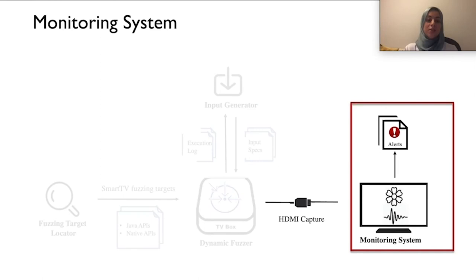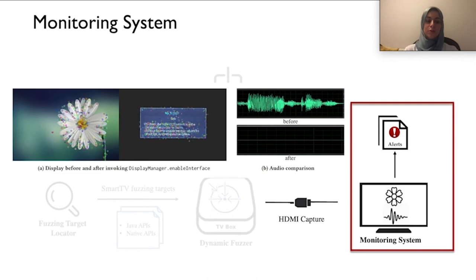To detect potential anomalies triggered by a test case, the fuzzer leverages two channels. First, it inspects the execution log to spot indications of cyber anomalies. Second, it relies on the external monitor to capture physical changes. Specifically, we launch a media player to play visual and audio content before and after each test execution, redirect the signals via an HDMI capture device for comparison, and compare the signals using image and audio comparison algorithms. If there are any discrepancies, alerts are outputted.